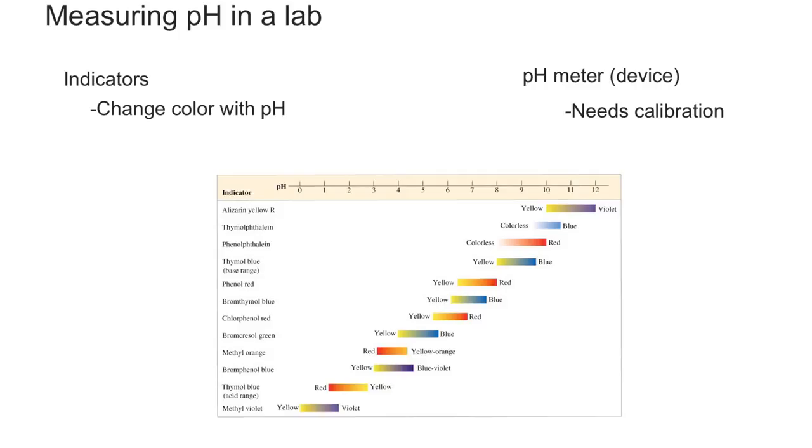The way it works is you have this device with a display that will show the number once you put in the part of the equipment that can measure the pH of the solution. Depending on your device, it might have a needle that you can submerge into your solution. And just like any electronic device, it needs to be calibrated.